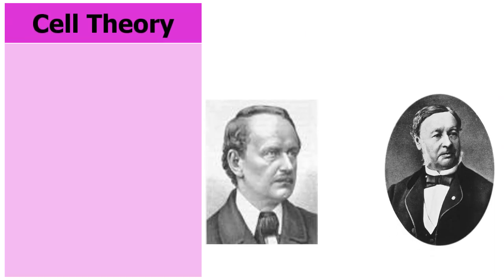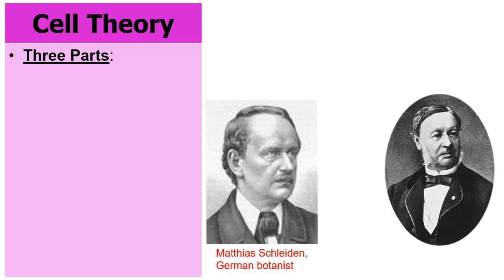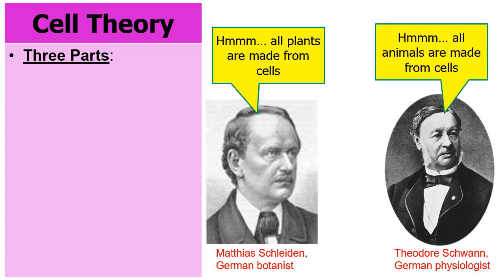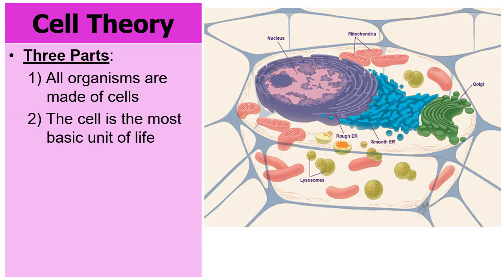As time passes, eventually something called the cell theory develops, and the cell theory has three parts. The guy on the left, Matthias Schleiden, is a botanist who studies plants, and he notices that every single plant sample he examines is made from cells. The gentleman on the right, Theodore Schwann, is a physiologist studying animal samples, and he realizes all animals are made from cells. Combine these two, and it's really that all organisms are made from at least one single cell.